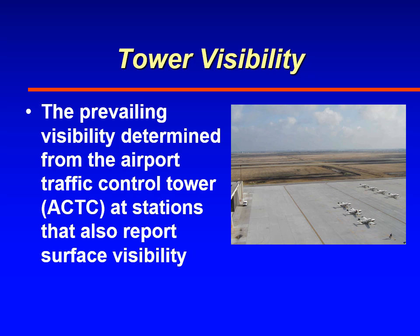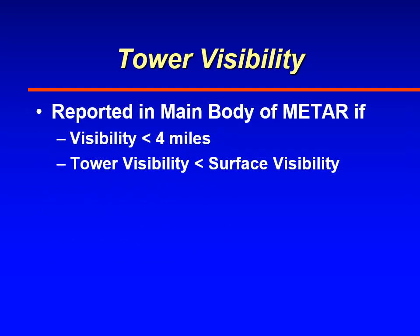At certain airports, you'll have the ASOS, AWOS, or a human making an observation. When conditions warrant, the tower will also make observations. That happens when the visibility drops below four miles. When it drops below four miles, both the control tower and the ASOS, AWOS, or human weather observer are making observations. The lowest of the two will be put in the main body of the METAR, and the higher one will be put in the remarks section. You should know this and know how to distinguish which is the prevailing visibility.